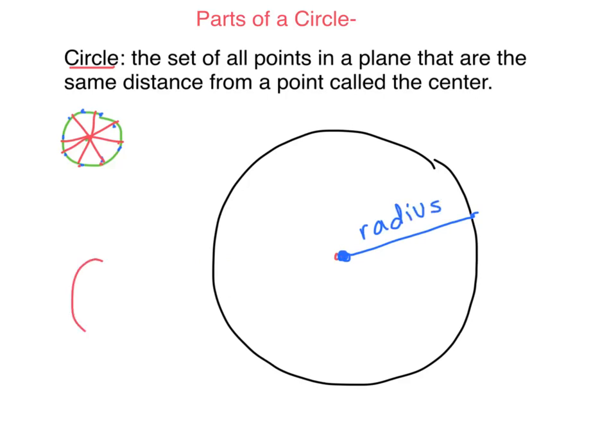If I drew you another little circle, there's a lot of radii — that's the plural. There's a lot of radii in a circle. Here's a radius, here's a radius, here's a radius. It just has to go from the middle to the outside.